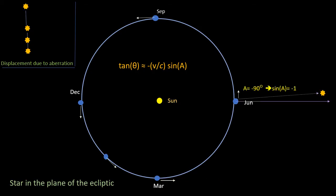In June, the Earth is moving at 90 degrees to the star's position. So the star has its maximum position shift, minus V over C. And in September, the Earth is now moving directly away from the star. So the aberration is now zero and the star isn't displaced at all. So as you can see, the star traces out a straight-line path over the course of a year.